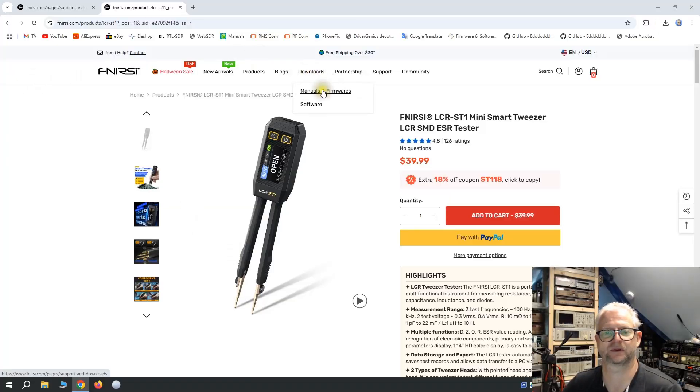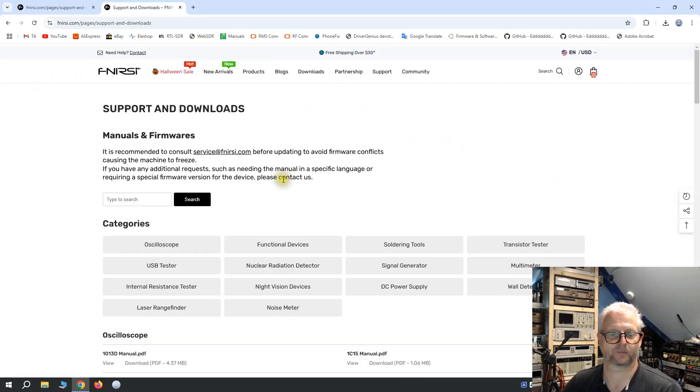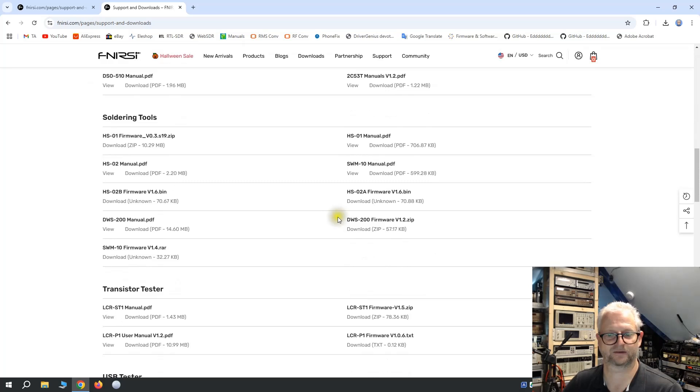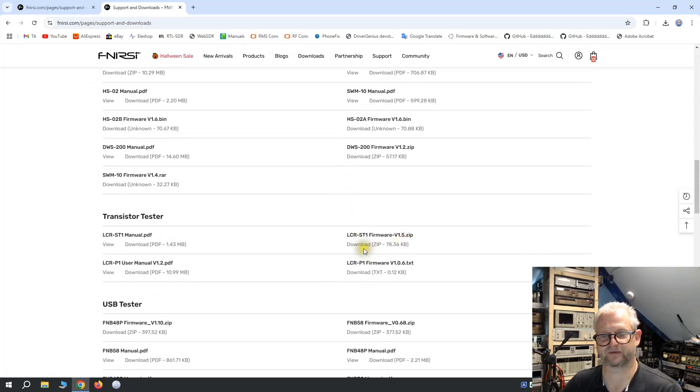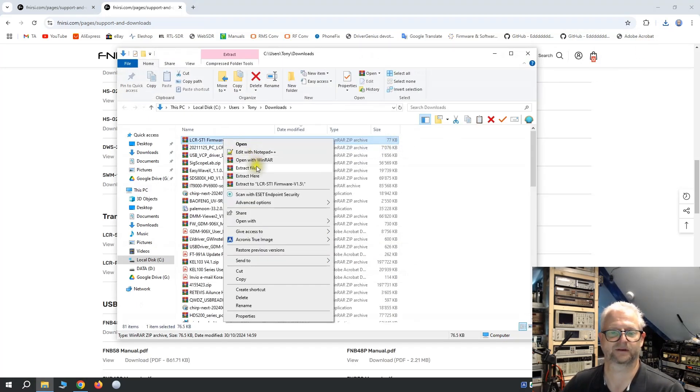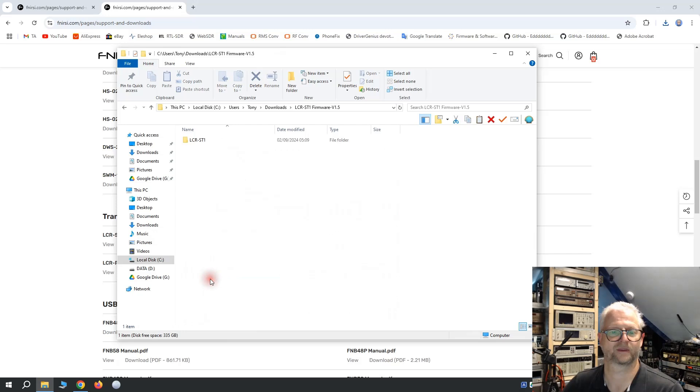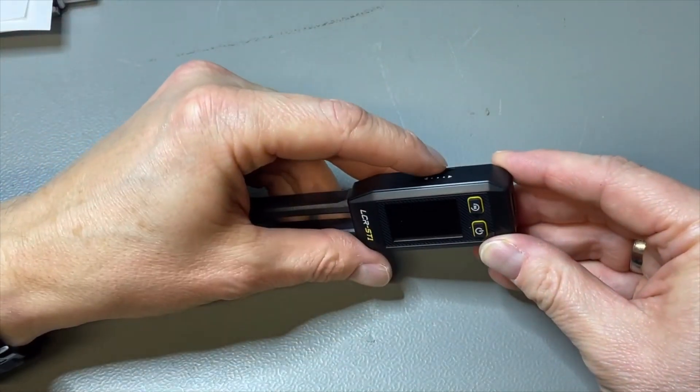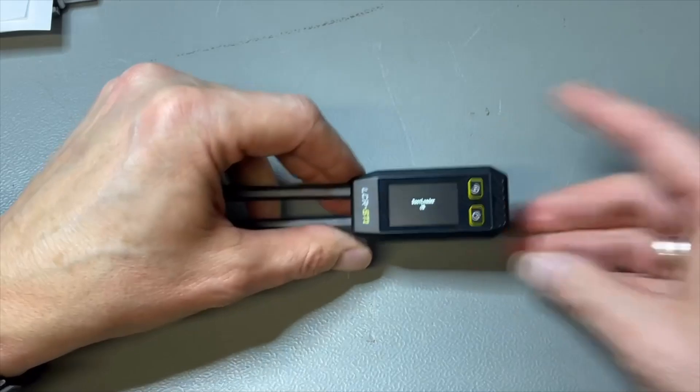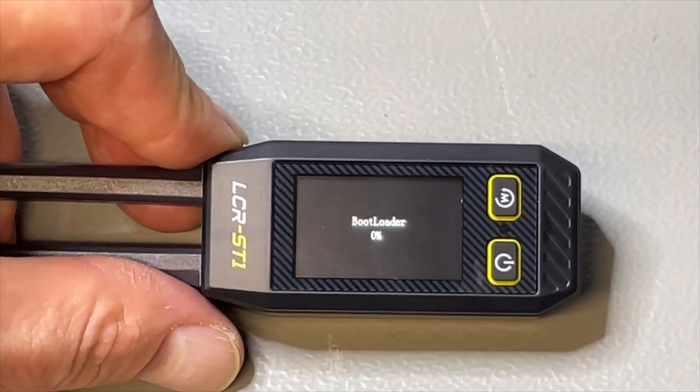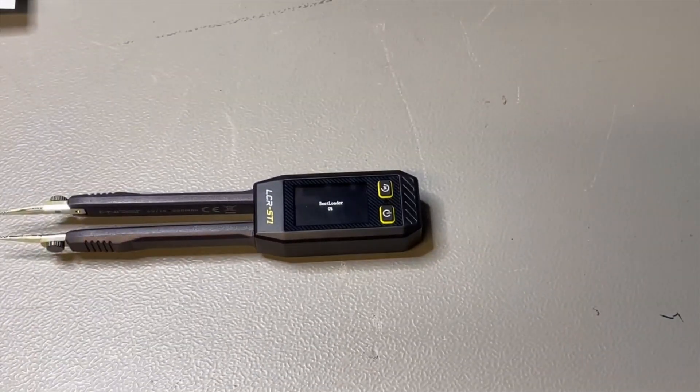Okay, let's quickly do the firmware update. We are on the website of FNIRSI. And then we go to downloads, manuals and software. We can type the device or we just scroll down. And here we have the firmware 1.5. Let's download it. It's there in the download folder. Open it in the folder. And just extract the files. Before we connect it to the PC, we need to push this one here and the power button. And then it says bootloader. Now it is in firmware mode.